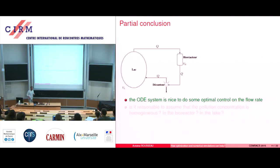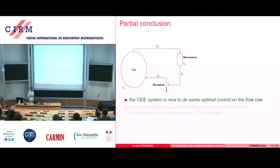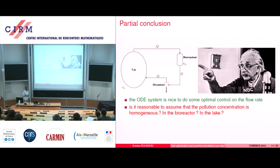Partial conclusion. The ODE system is nice to do some control on the flow rate. Even with a more complicated growth law, you can do some optimization, some control on the ODE, which is good. But of course, is it reasonable to assume that the pollution concentration is homogeneous in the bioreactor and in the lake? Of course not.